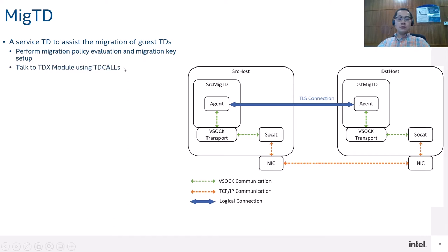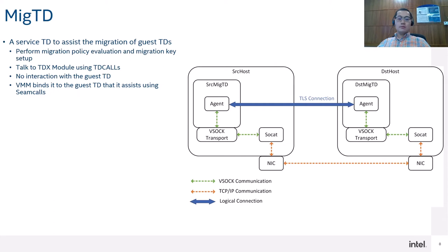The micro TD talks to the TDX module to set the migration key using TD call, and it doesn't need to interact with the guest TD during migration. The micro TD is bound to the guest TD by the VMM using a SIM call. One micro TD can assist the migration of multiple guest TDs at the same time — for example, if the host has 10 TDs to be migrated simultaneously, we can use just one micro TD to support all 10 guest TDs.